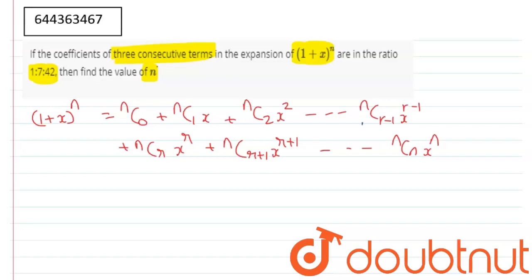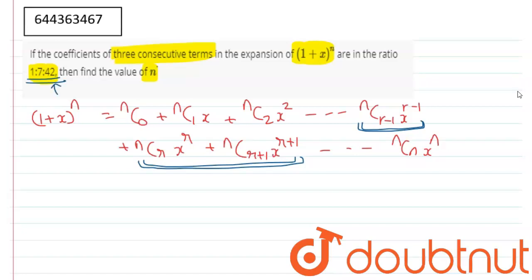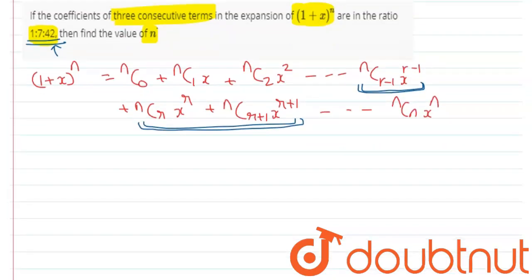Now, why have we written three terms around r? Because let us say these are the three consecutive terms, and we are given their ratio as 1:7:42. Using this ratio, we will calculate the value of n. So let us write what is given: the coefficients nC(r-1) divided by nCr equals 1/7.